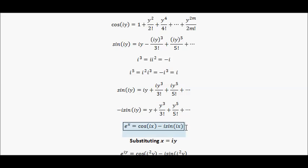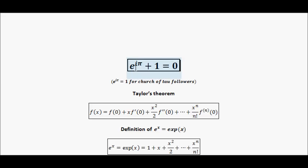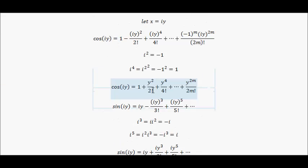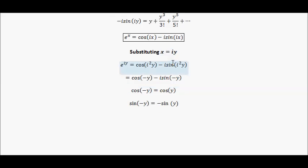We've got an expression for e to the x in terms of cosines and sines, and we're really close to proving Euler's identity. Euler's identity has an e to the i, so let's substitute x equals iy into this expression. E to the iy equals cosine(i times iy) minus i·sine(i times iy), which is cosine(i squared·y) minus i·sine(i squared·y). Since i squared is negative 1, that's cosine(minus y) minus i·sine(minus y).